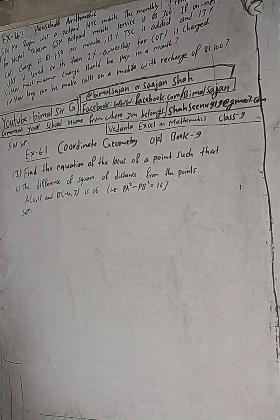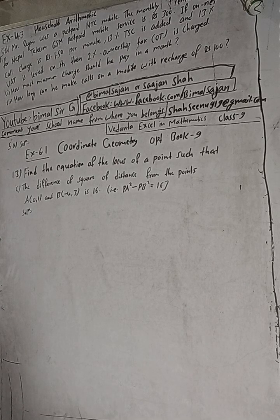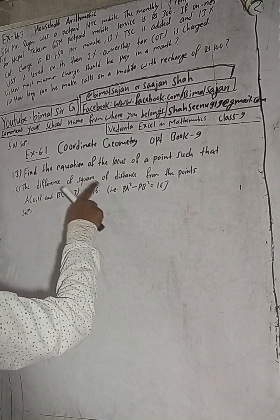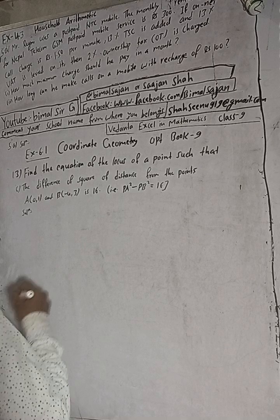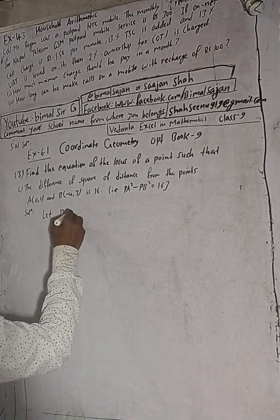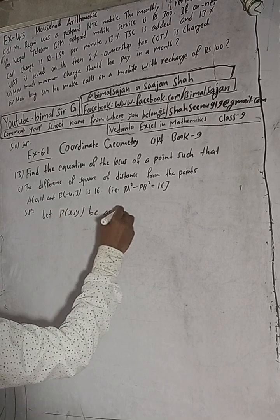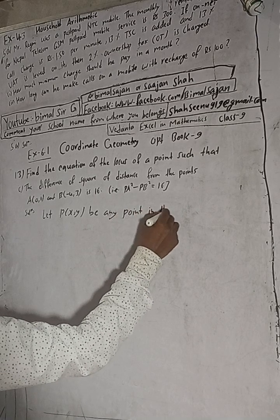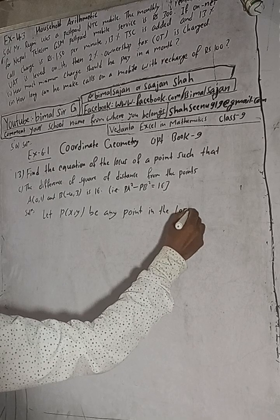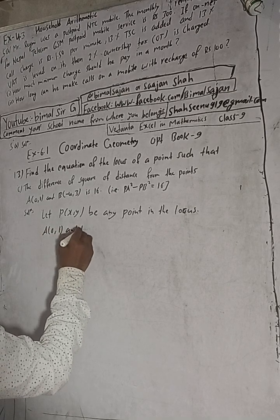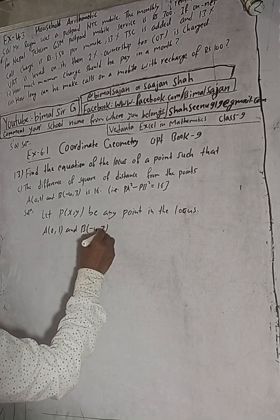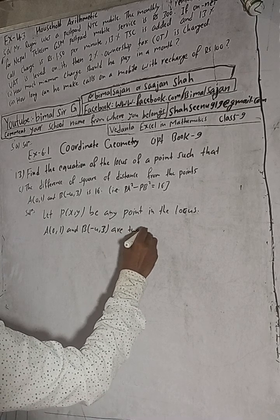Hi class 9 and 10 students, welcome back to Bhimalsarjee YouTube channel. This is question number 13C, exercise 6.1, coordinate geometry, optional mathematics class 9. The question is: find the equation of the locus of a point such that the difference of the square of distances from the points A(0, 1) and B(-4, 3) is 16.